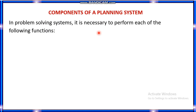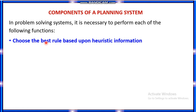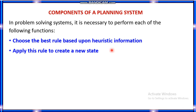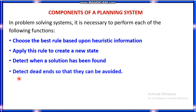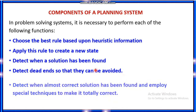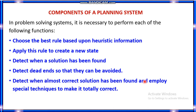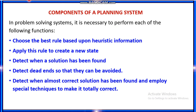Next we are going to see the components of a planning system. The five components are: first, choose the best rule based upon heuristic information; second, apply this rule to create a new state; third, detect when a solution has been formed; fourth, detect dead ends so they can be avoided; fifth, detect when an almost-correct solution has been formed and employ special techniques to make it totally correct.